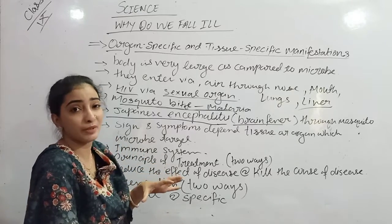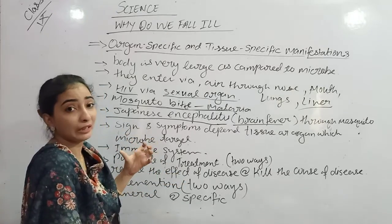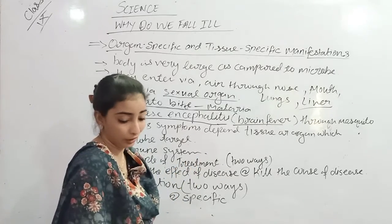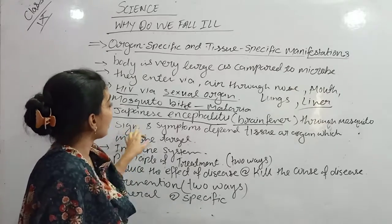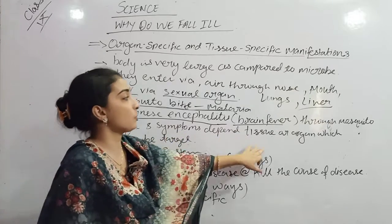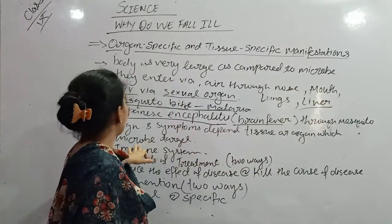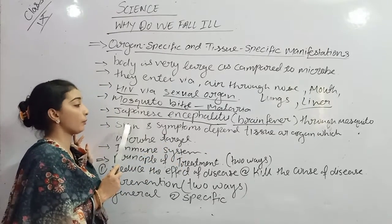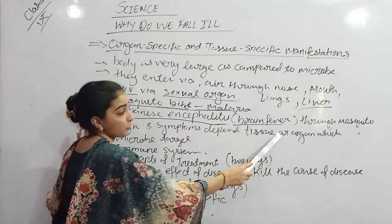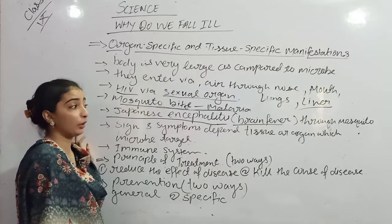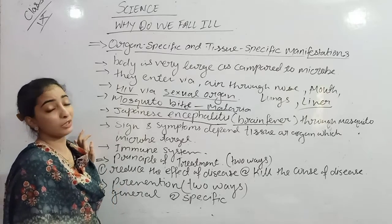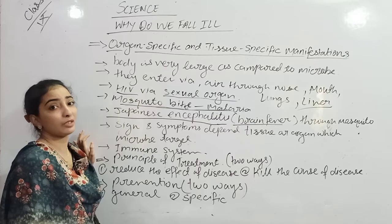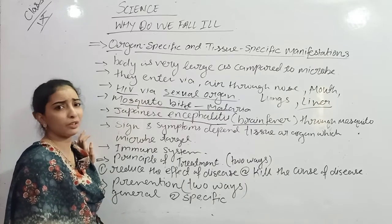Some things get targeted specifically - tissues also come into the target, which is why different diseases are created. The signs and symptoms depend on which tissue and organ the microbe targets. If the microbe targets the brain, we will have a lot of vomiting and unconsciousness.